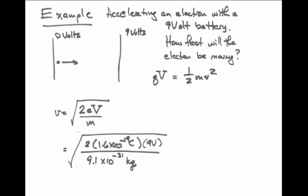If we put in some numbers, the electron charge is 1.6 times 10 to the minus 19 coulombs. We're saying that, in this case, the voltage difference is 9 volts. And we remember that the electron mass is about 9 times 10 to the minus 31 kilograms.